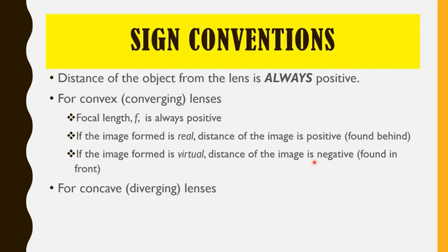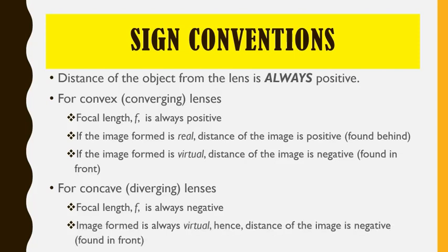For concave or diverging lenses, the focal length is always negative, and the image formed is always a virtual one. Therefore, the distance of the image from a diverging or concave lens is always also negative, because they are found or formed in front of the lens.